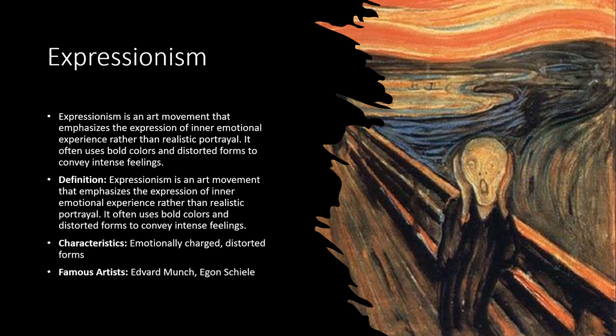Expressionism is an art movement that emphasizes the expression of the inner emotional experience rather than realistic portrayal. It often uses bold colors and distorted forms to convey intense feeling. The characteristics of this are emotionally charged and distorted forms. This is an example of Edvard Munch's painting 'The Scream.' You can see the distorted form and emotional expression — it's emotionally charged. You look at it and get an emotional feeling, in this case a scream.